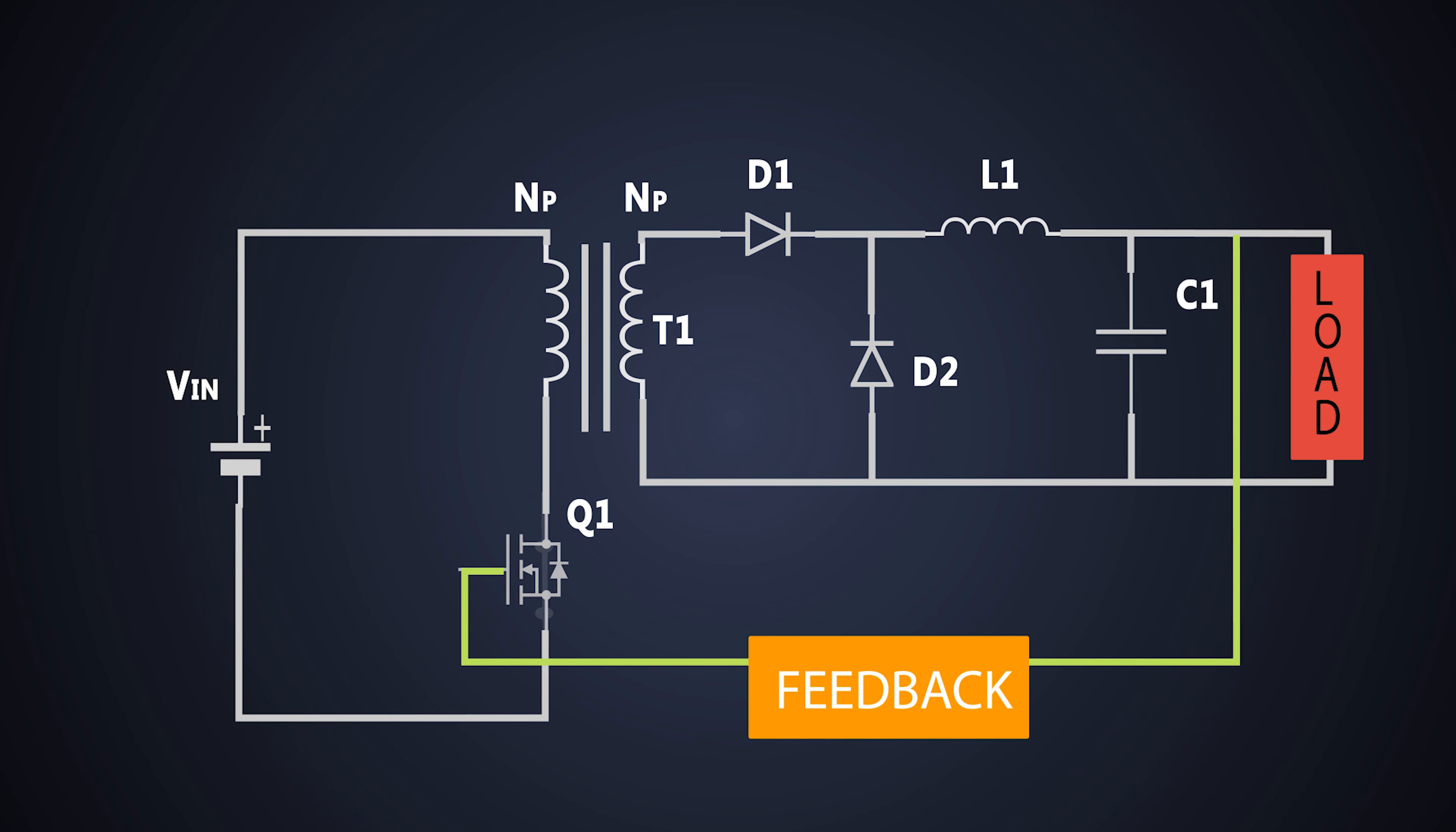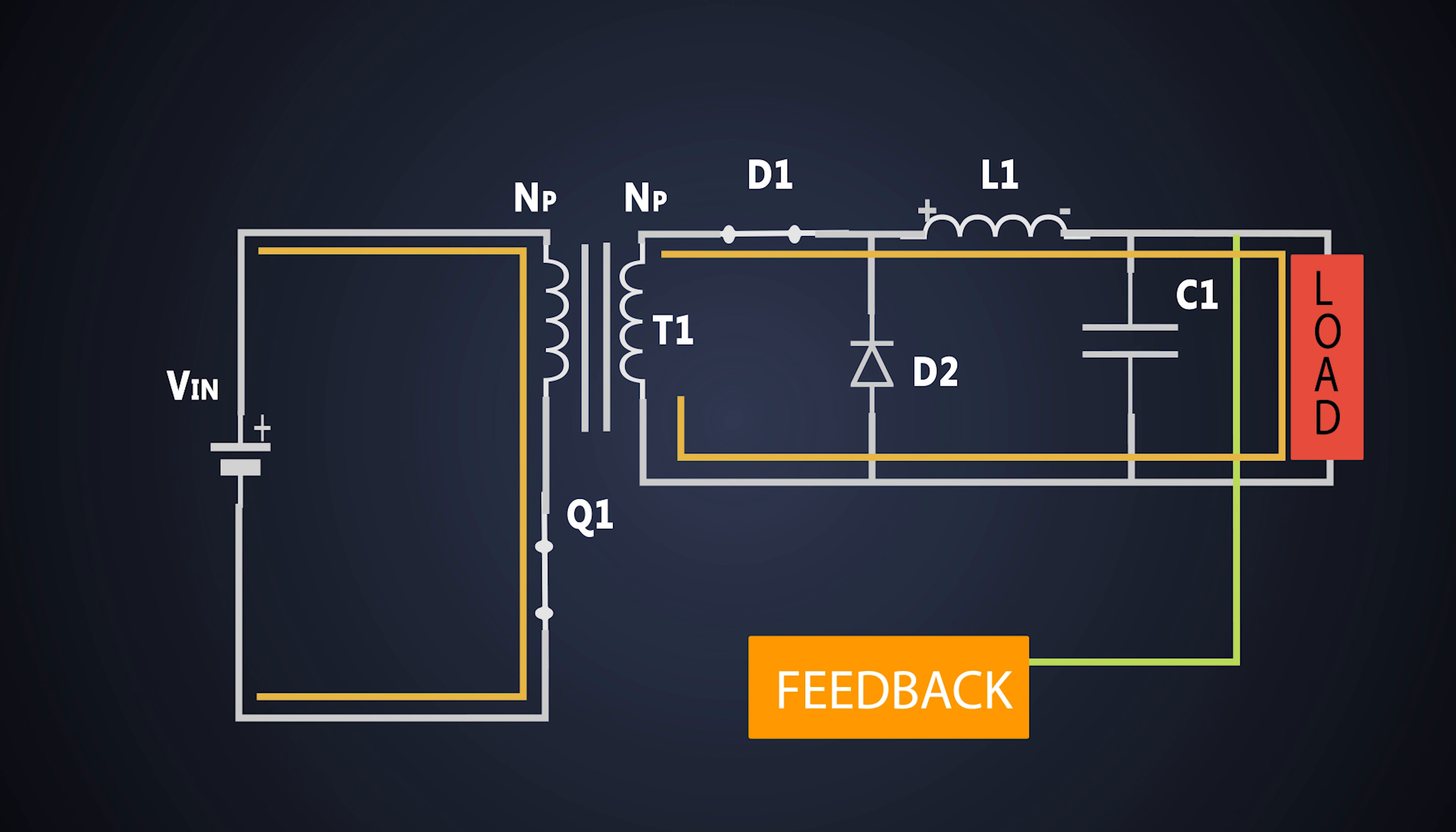When the MOSFET Q1 is turned on, the current starts flowing through the primary and due to electromagnetic induction, the current in the secondary winding flows in this direction. The D1 gets forward biased.